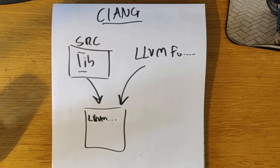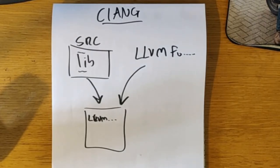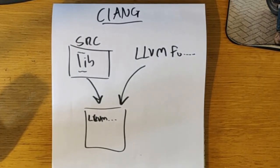AFL has things like persistence mode, which I'll go into. It also had the notion of a fork server, so instead of ripping the whole process down every time, you're very quickly respawning it. But at the end of the day, it's actually really slow compared to integrating fuzzing into your software development life cycle.